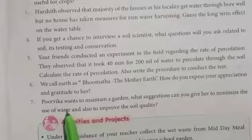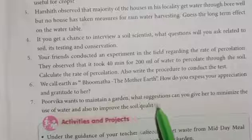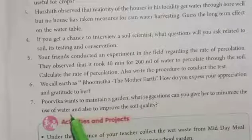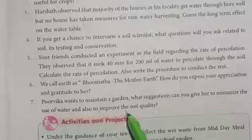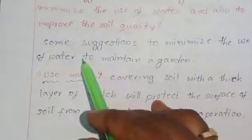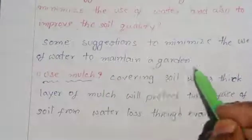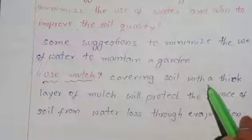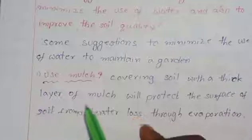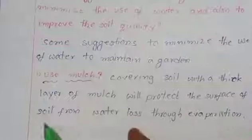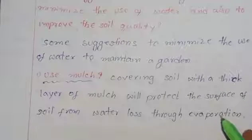Poorvika wants to maintain a garden. What suggestions can you give her to minimize the use of water and improve soil quality? Suggestions to minimize water use: Use mulch — covering soil with a thick layer of mulch will protect the surface of soil from water loss through evaporation.